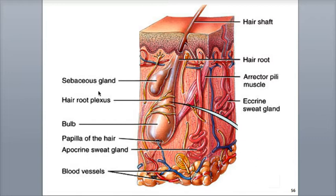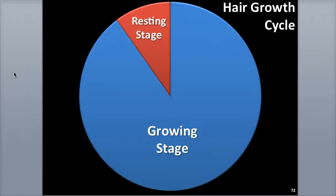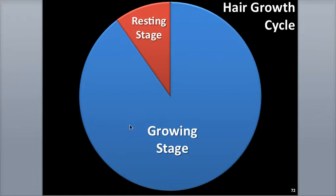All hair follicles undergo a growth cycle, which consists of a growing stage, a regression stage, and a resting stage. The hair matrix cells divide by mitosis during the growth stage, and as the new cells accumulate, the cells are pushed upward, become keratinized, and die as the hair grows longer. This lasts for about 2 to 6 years, and approximately 85% of the hairs at any one time are in the growth stage.